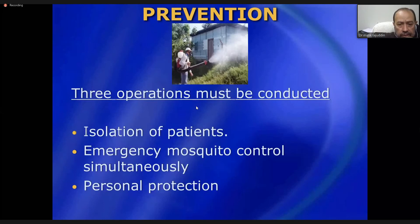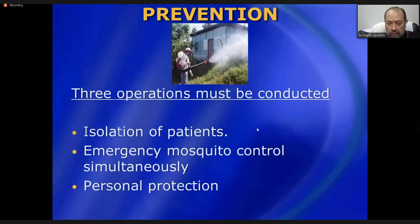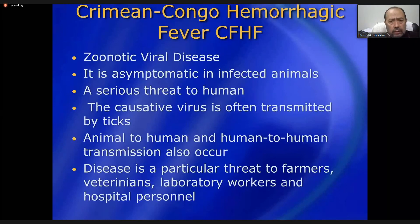For prevention, three actions must be conducted simultaneously: isolation of the patient, emergency mosquito control, and personal protection. If we work on these three aspects together, the spread of the disease can be minimized significantly and the disease brought under control.